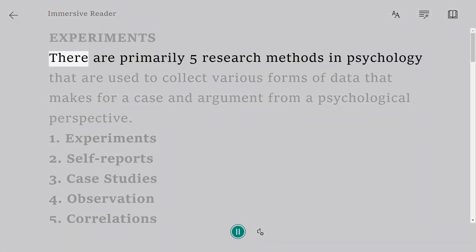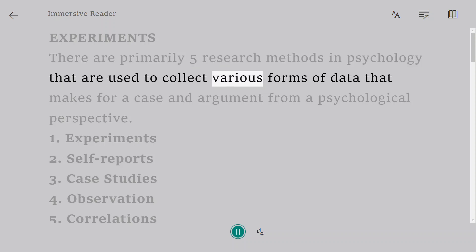Experiments. There are primarily 5 research methods in psychology that are used to collect various forms of data that makes for a case and argument from a psychological perspective.